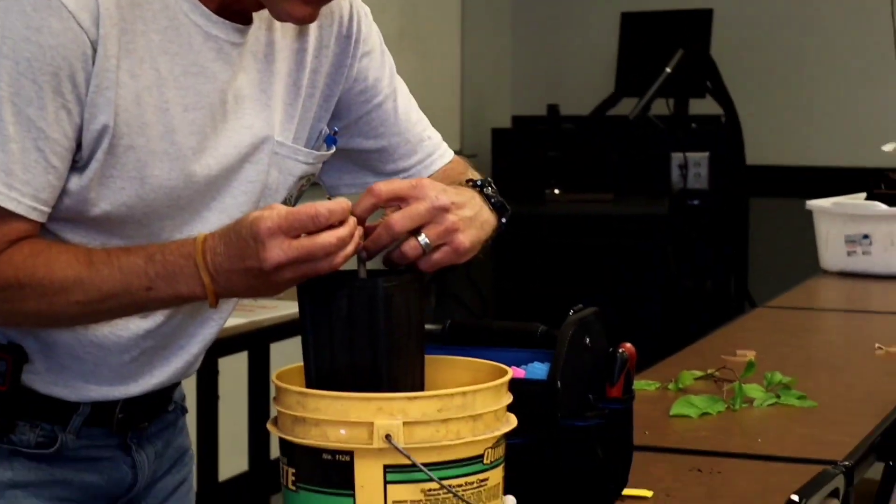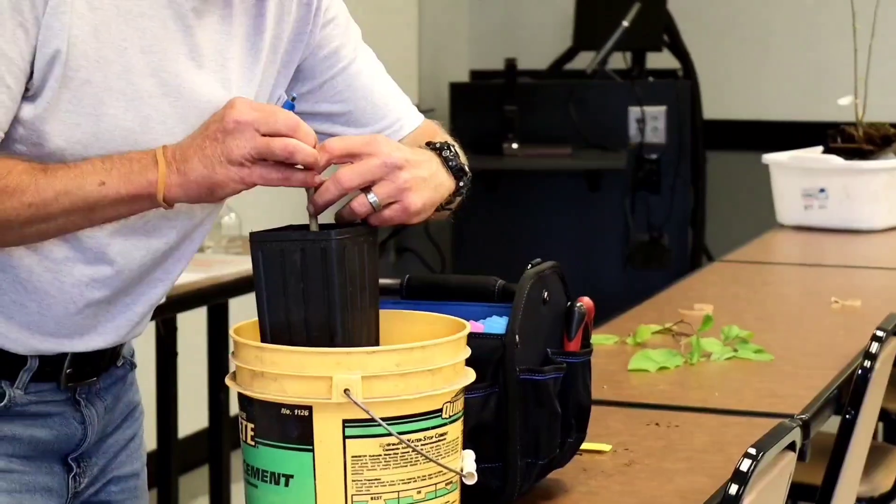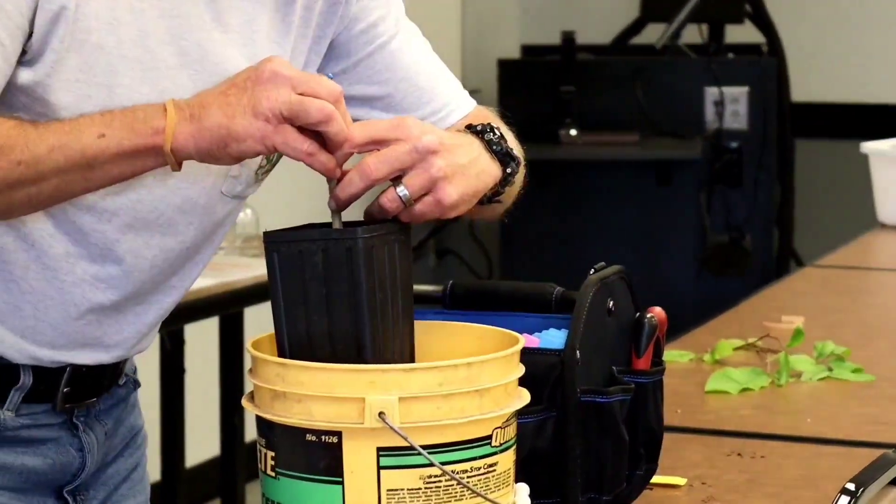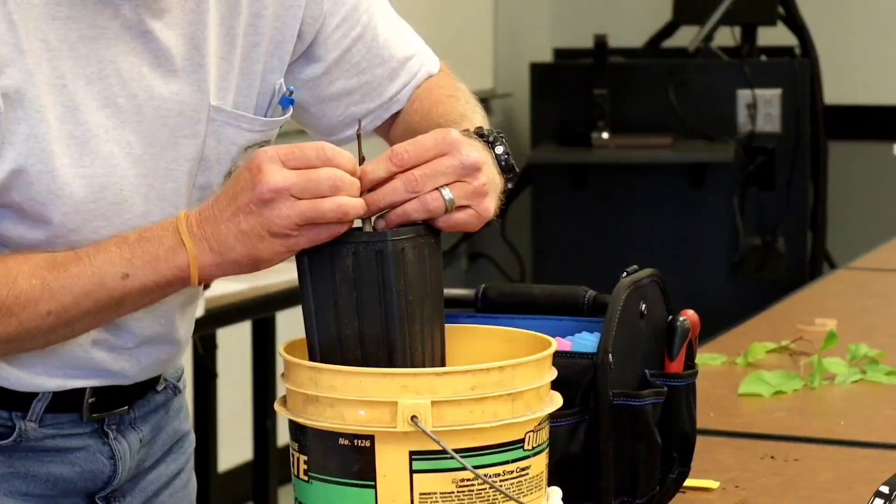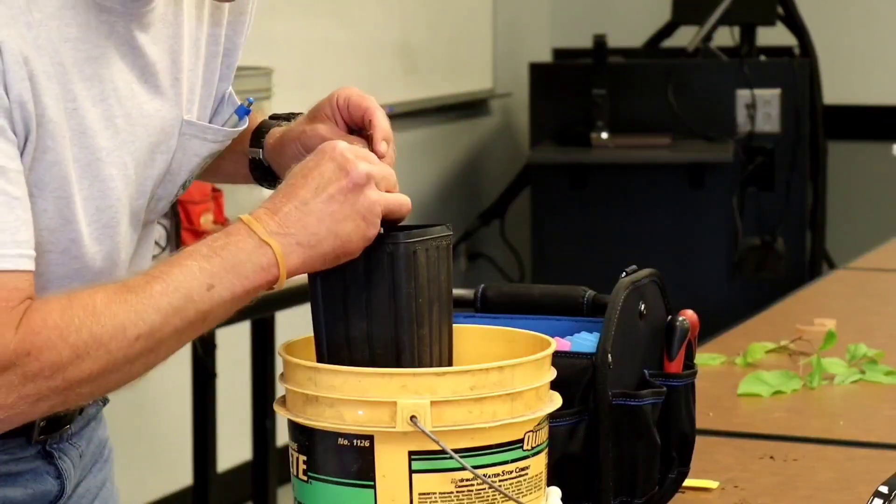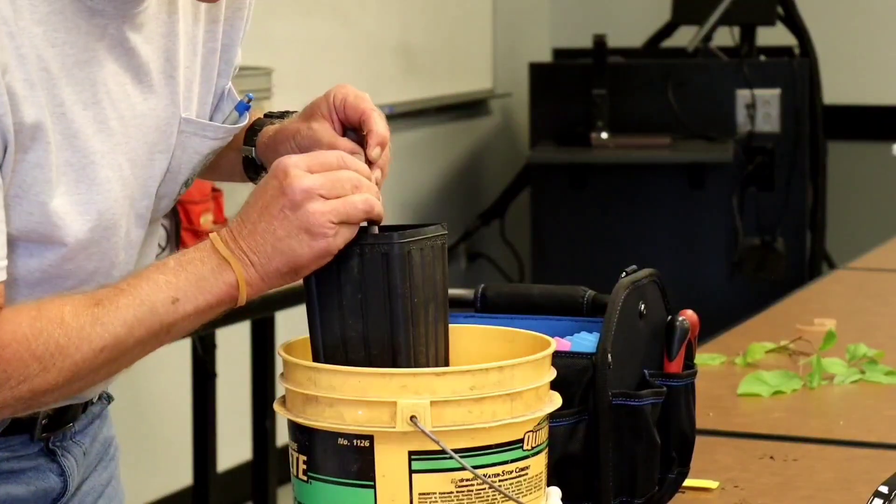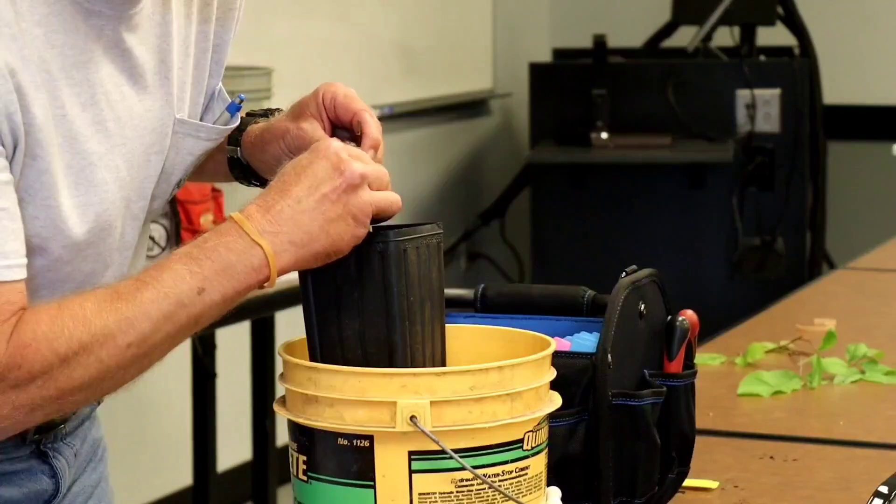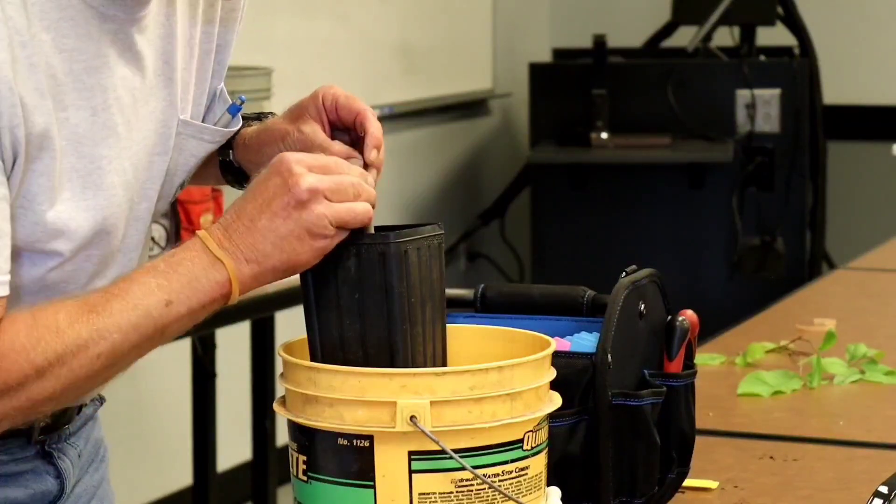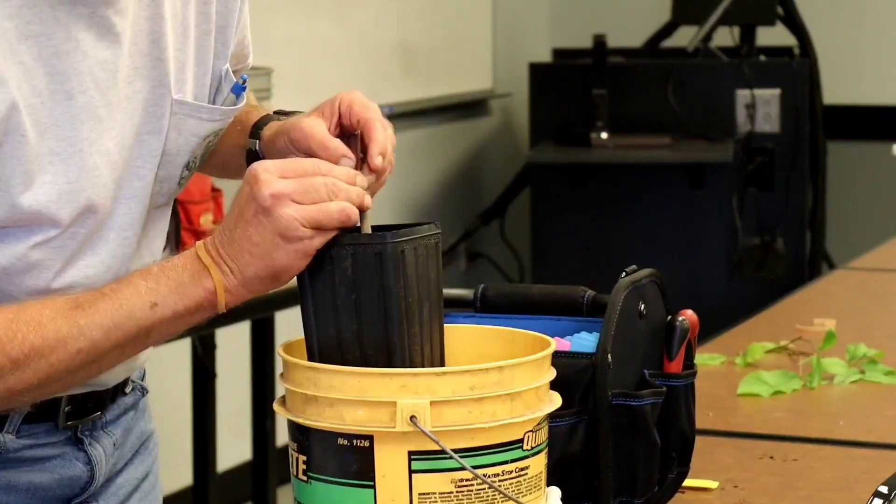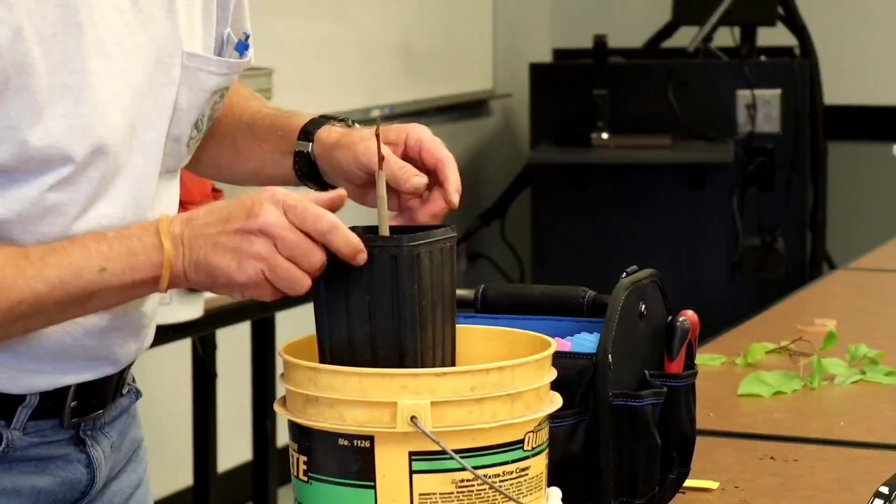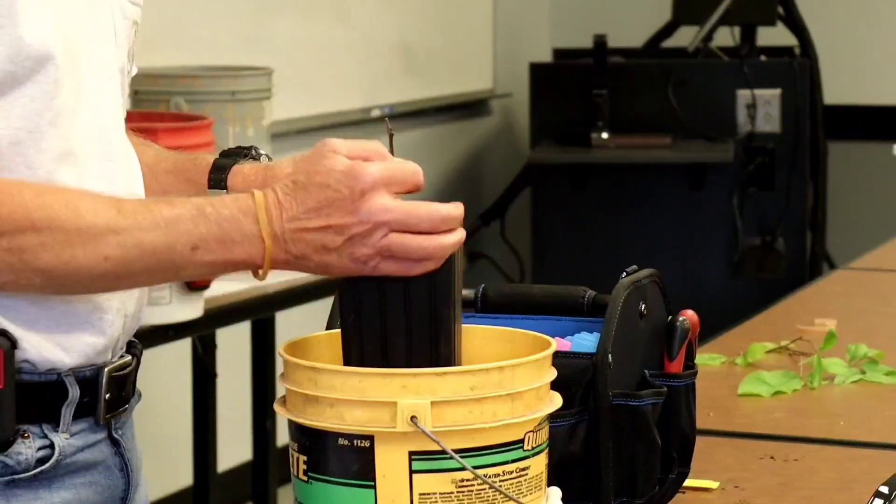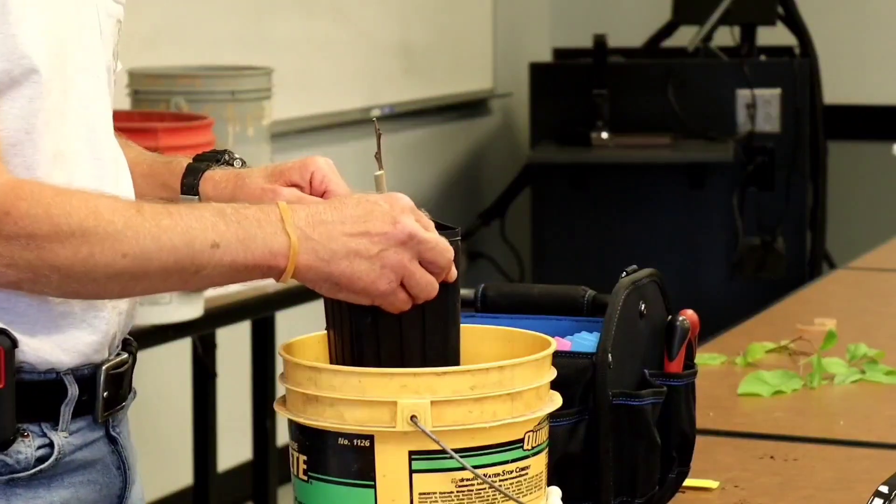I'm going to peel the bark back just a little bit where I can get in there with it. On one side, I want to make sure that it's touching on the one side. Just like that. You can see the opening, and it's just touching.